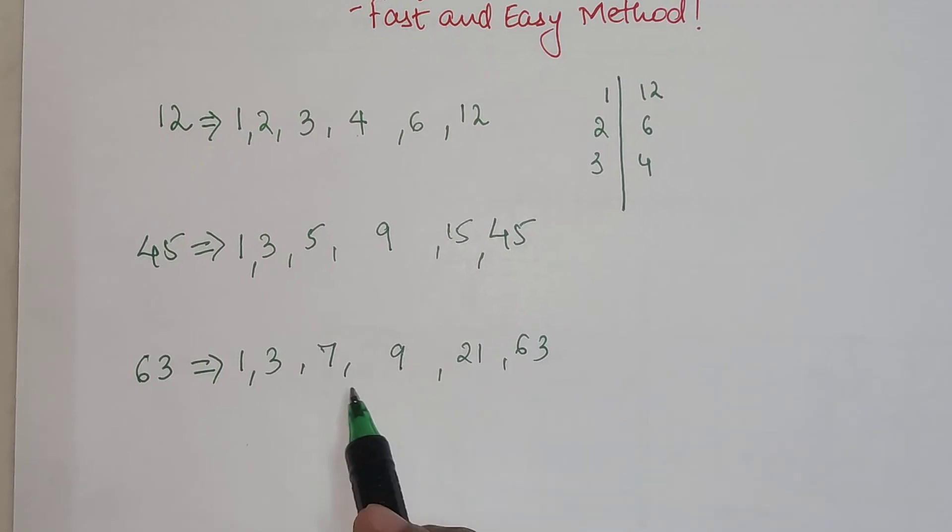Now please understand, we've got 9, so the only number remaining is 8 and we know that 8 doesn't divide 63. So these are the factors for the number 63.